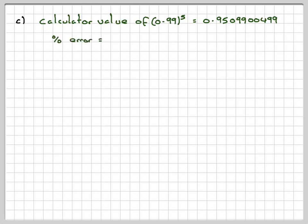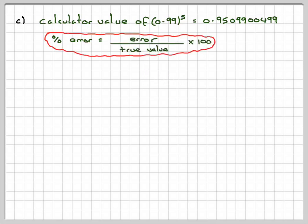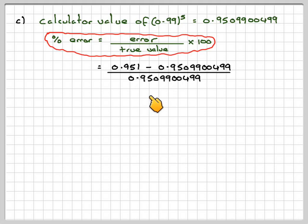So the percentage error is the error divided by the true value times 100. So our percentage error will be 0.951 minus this number. You're only interested in the positive difference of these two numbers, divided by the actual value.